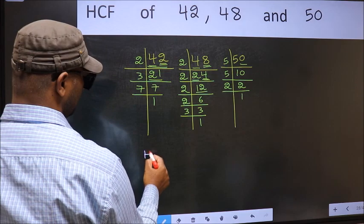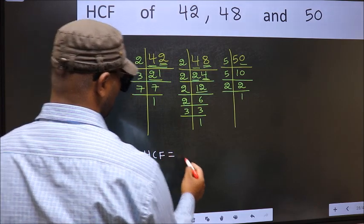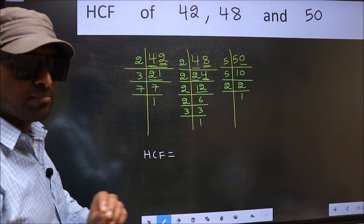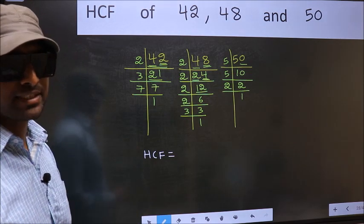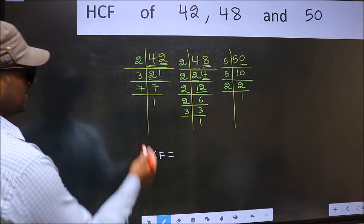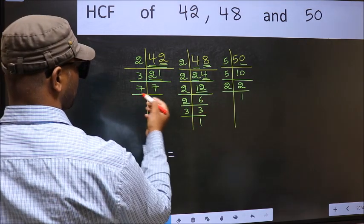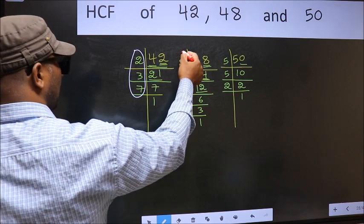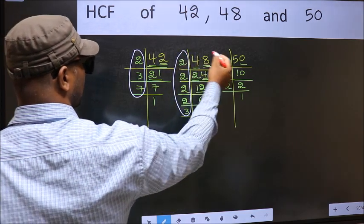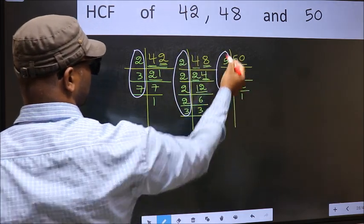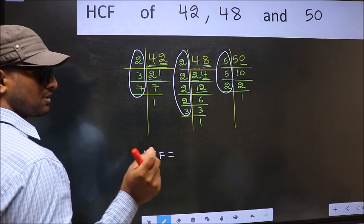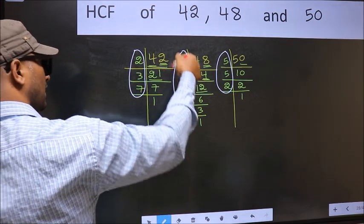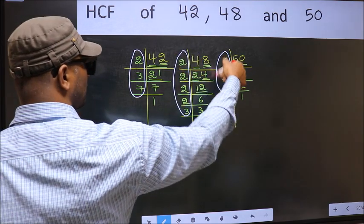Therefore, our HCF is—HCF is the product of the numbers which should be present in these 3 places. That is here, and here, and also here. So now let us find the numbers which are present here, here, and also here.